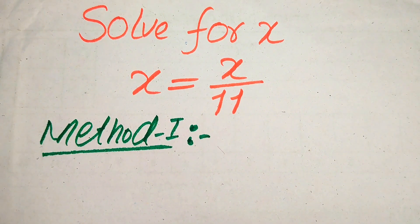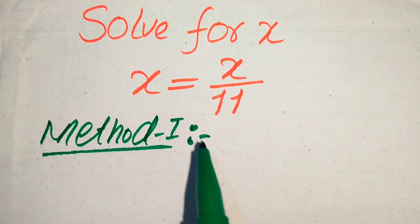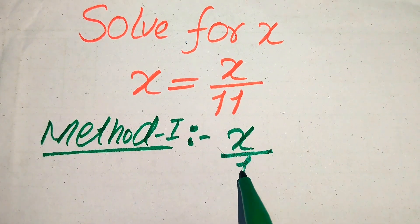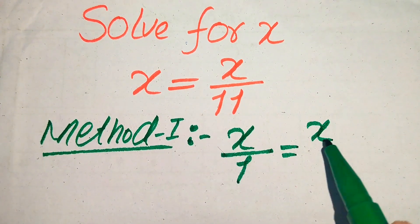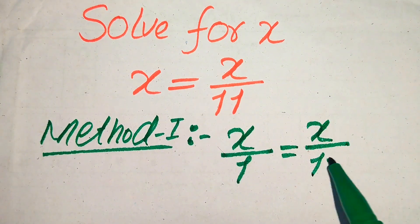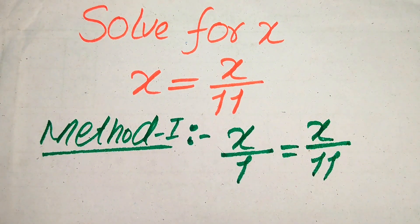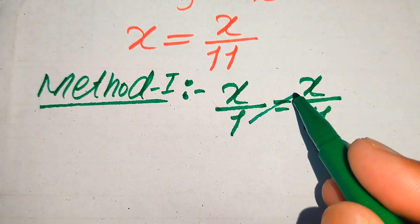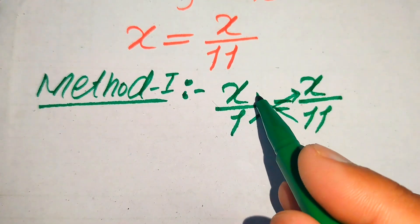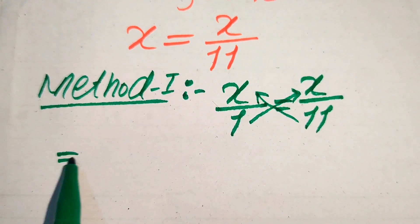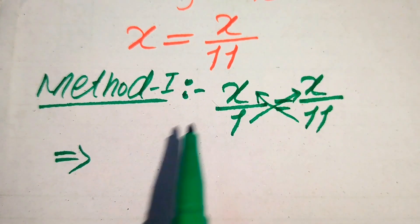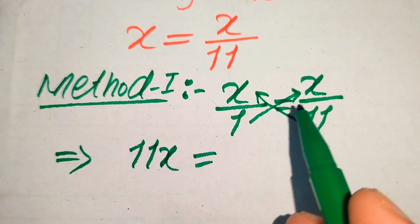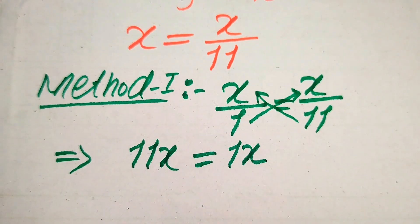We move towards our first method. In the first method, the denominator on the left hand side is 1, so it will be written as x divided by 1 equals x divided by 11. Now we need to cross multiply the terms: we multiply 1 with x and we multiply 11 with x. So 11 times x becomes 11x, and 1 times x becomes 1x.